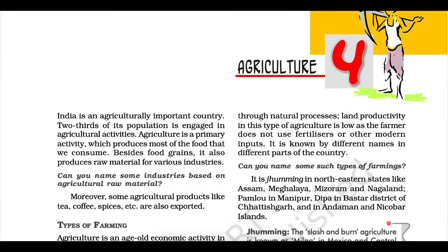Millets. Jowar, Bajra, and Ragi are the important millets grown in India. Though these are known as coarse grains, they have very high nutritional value. For example, Ragi is very rich in iron, calcium, other micronutrients, and roughage. Jowar is the third most important food crop with respect to area in production. It is a rain-fed crop mostly grown in moist areas, which hardly needs irrigation. Major Jowar-producing states were Maharashtra, Karnataka, Andhra Pradesh, and Madhya Pradesh in 2011-12. Bajra grows well on sandy soils and shallow black soil. Major Bajra-producing states were Rajasthan, Uttar Pradesh, Maharashtra, Gujarat, and Haryana in 2011-12. Ragi is a crop of dry regions and grows well on red, black sandy, loamy, and shallow black soils. Major Ragi-producing states are Karnataka, Tamil Nadu, Himachal Pradesh, Uttarakhand, Sikkim, Jharkhand, and Arunachal Pradesh.